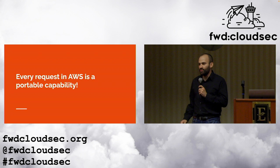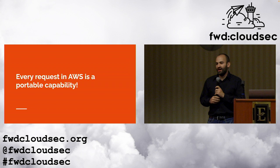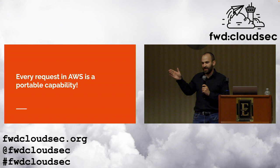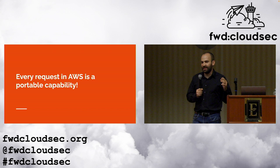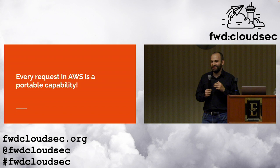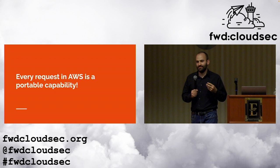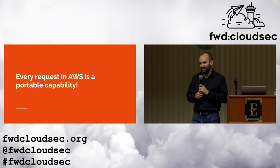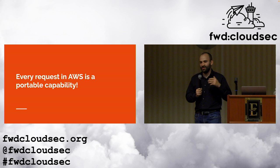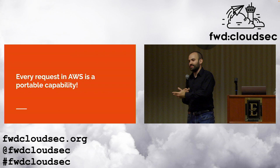When I make a request to DynamoDB, EC2, or KMS, I am building up a signed request that I can send to that service — or send to a friend — and for the period of time that request is valid, which is 15 minutes, they will have the capability to do whatever I was going to do against that AWS service. I've found zero exceptions. Every API-based request in AWS uses SigV4, and every SigV4 request is a portable capability.